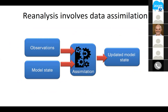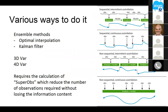Reanalysis is quite simple in concept. It combines observations and a model state through an assimilation process to produce an updated model state which will generally bring the model closer to the observations, providing a far more realistic simulation. There are various methods for data assimilation, including ensemble methods such as optimal interpolation and using a Kalman filter, and variational methods in three or four dimensions. Each method requires reducing the observations available down to a manageable number called super-obs, in such a way that you don't lose the information content of the larger data collection.